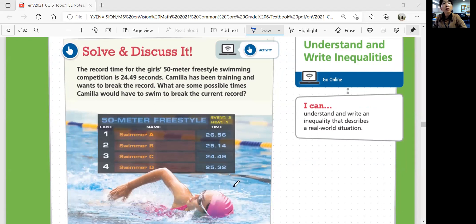So look at this information we have. The chart says that Lane 1 Swimmer A has 26.56, Swimmer B 25.14, Swimmer C 24.49, Swimmer D 25.39. Okay, which is 24.49.